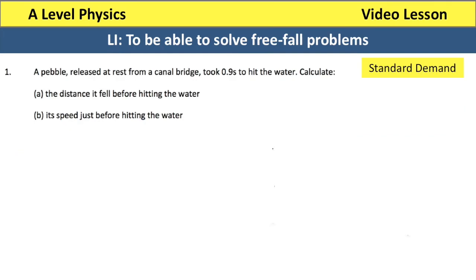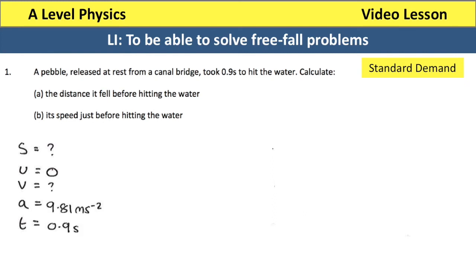A pebble released from rest from a canal bridge takes 0.9 seconds to hit the water. For part A we want to calculate the distance it falls before hitting the water. We begin by writing our SUVAT. We don't know S — that's what we want to work out. It's released from rest so U is 0. We don't know the speed it hits the ground at because it won't be zero. It is gravity pulling it down so A is 9.81, and the time is 0.9 seconds.